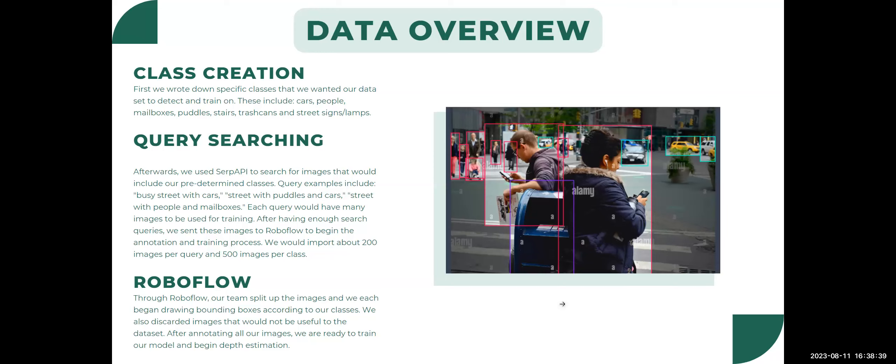After knowing this, we went on Google and started searching using queries to find the images we wanted our AI to be trained upon. Some examples of these queries were busy street with cars, street with puddles and cars, street with people and mailboxes. Each query would have around 100 images. By having enough queries, we were able to download onto Roboflow so we can set up these images to be trained by our AI.